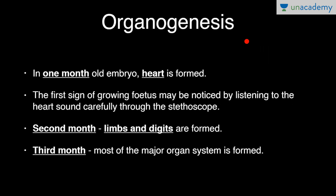Organogenesis, that is the development of organs. In a one-month-old embryo, the heart is formed. The first sign of a growing fetus may be noticed by listening to the heart sound carefully through the stethoscope. In the second month, limbs and digits are formed.